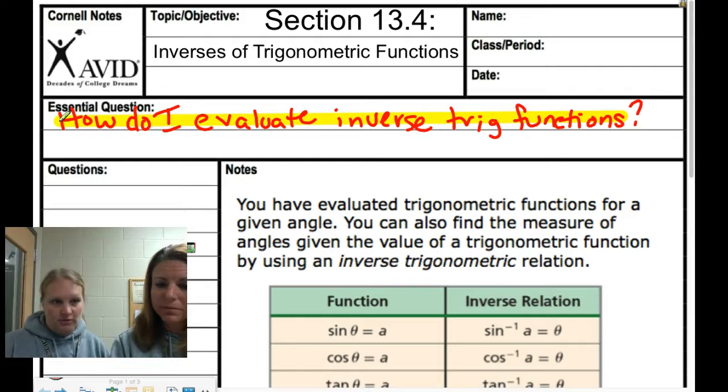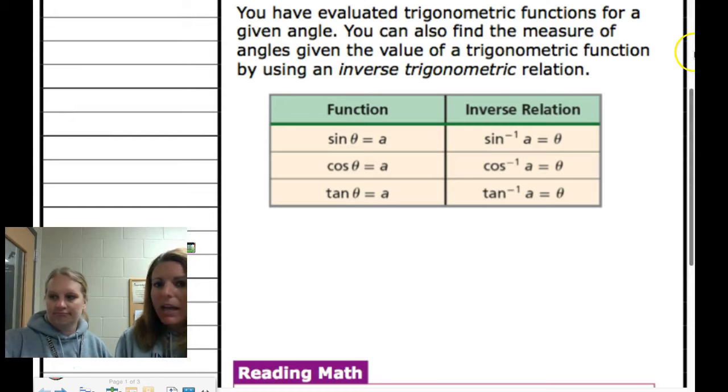If you look here, the inverse of sine would be sin^(-1). It doesn't mean the reciprocal - it's the inverse. Cosine would be cos^(-1), tangent would be tan^(-1).